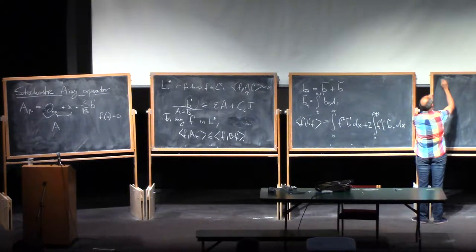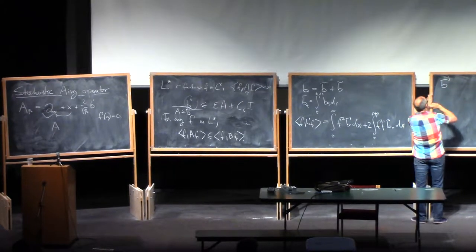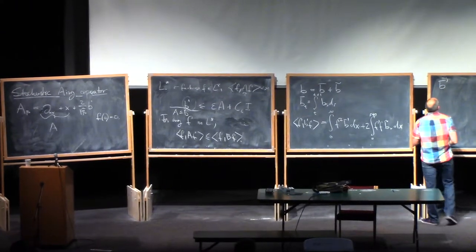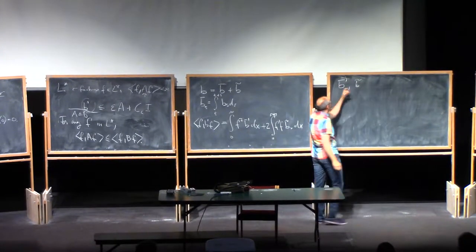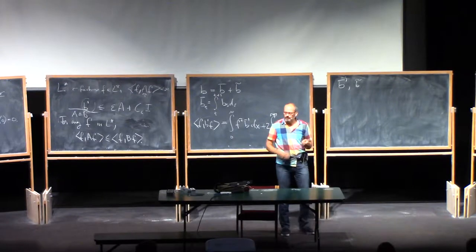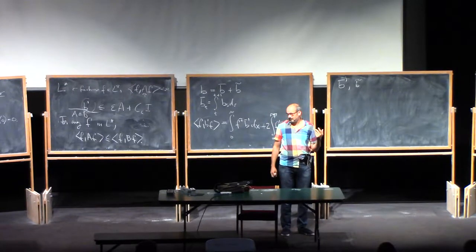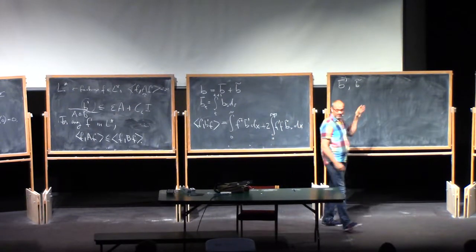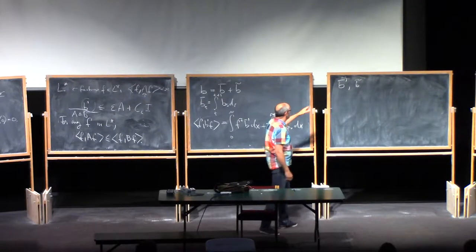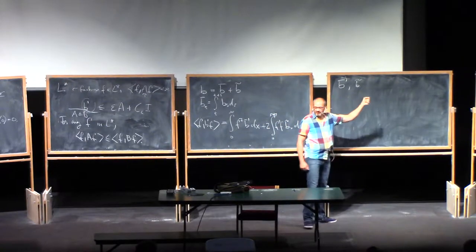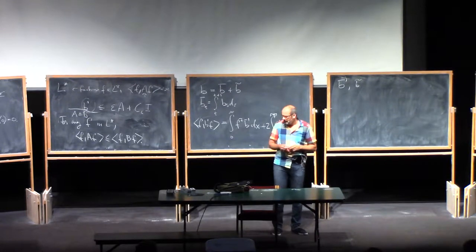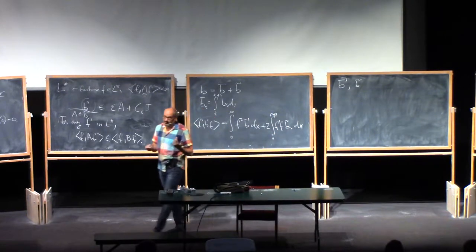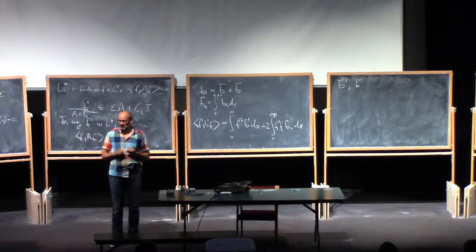This comes from bounds on B-tilde prime and B-bar prime. Both of these are stationary Gaussian processes as a function of T. The correlation decays very fast — if you go from x to x+1, they're already independent. So basically, as a function of time, they look like IID sequences of normals made continuous in some sense.